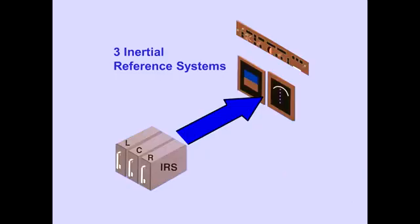Three Inertial Reference Systems, left, center, and right, provide flight information to the flight instruments.